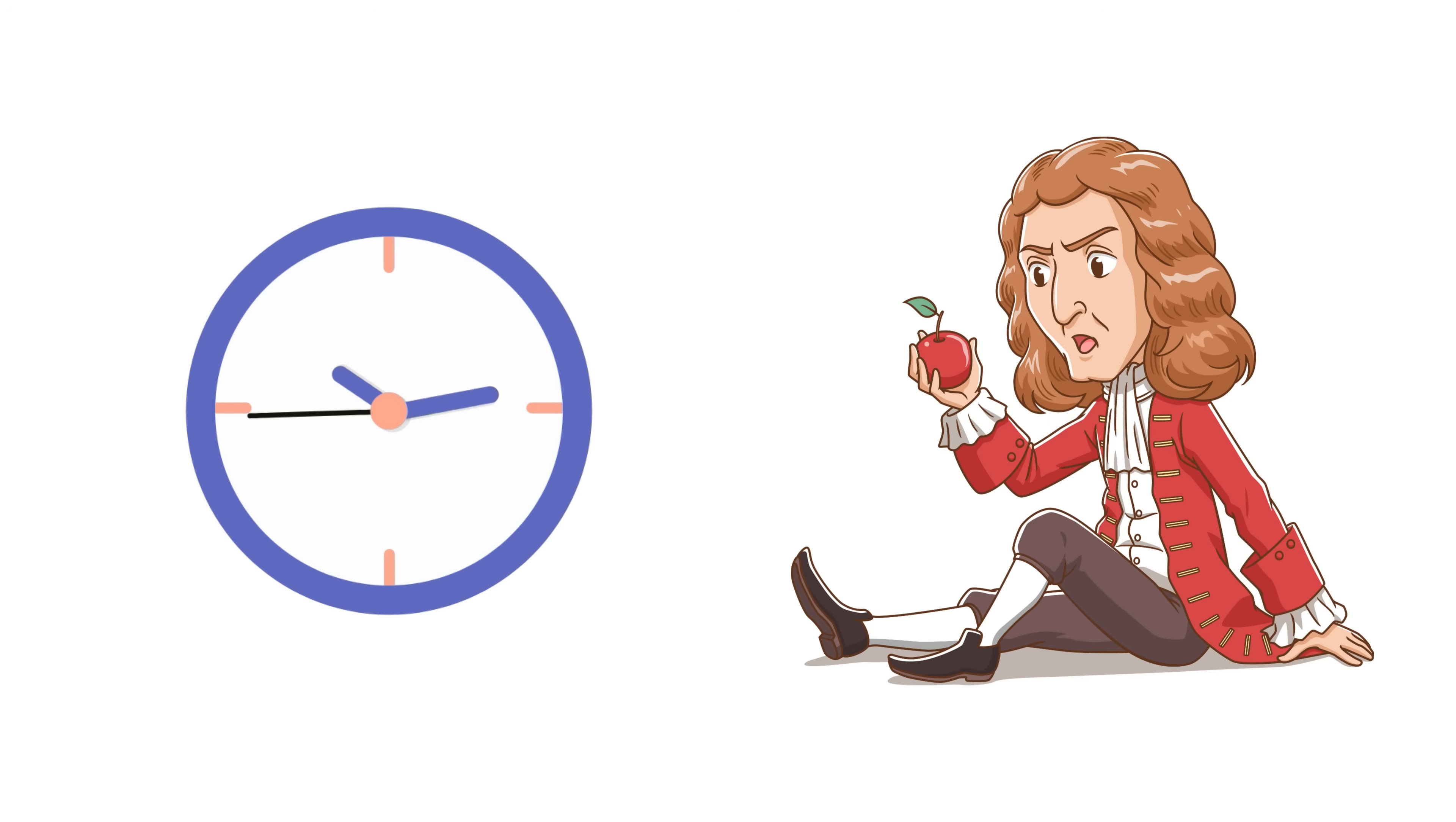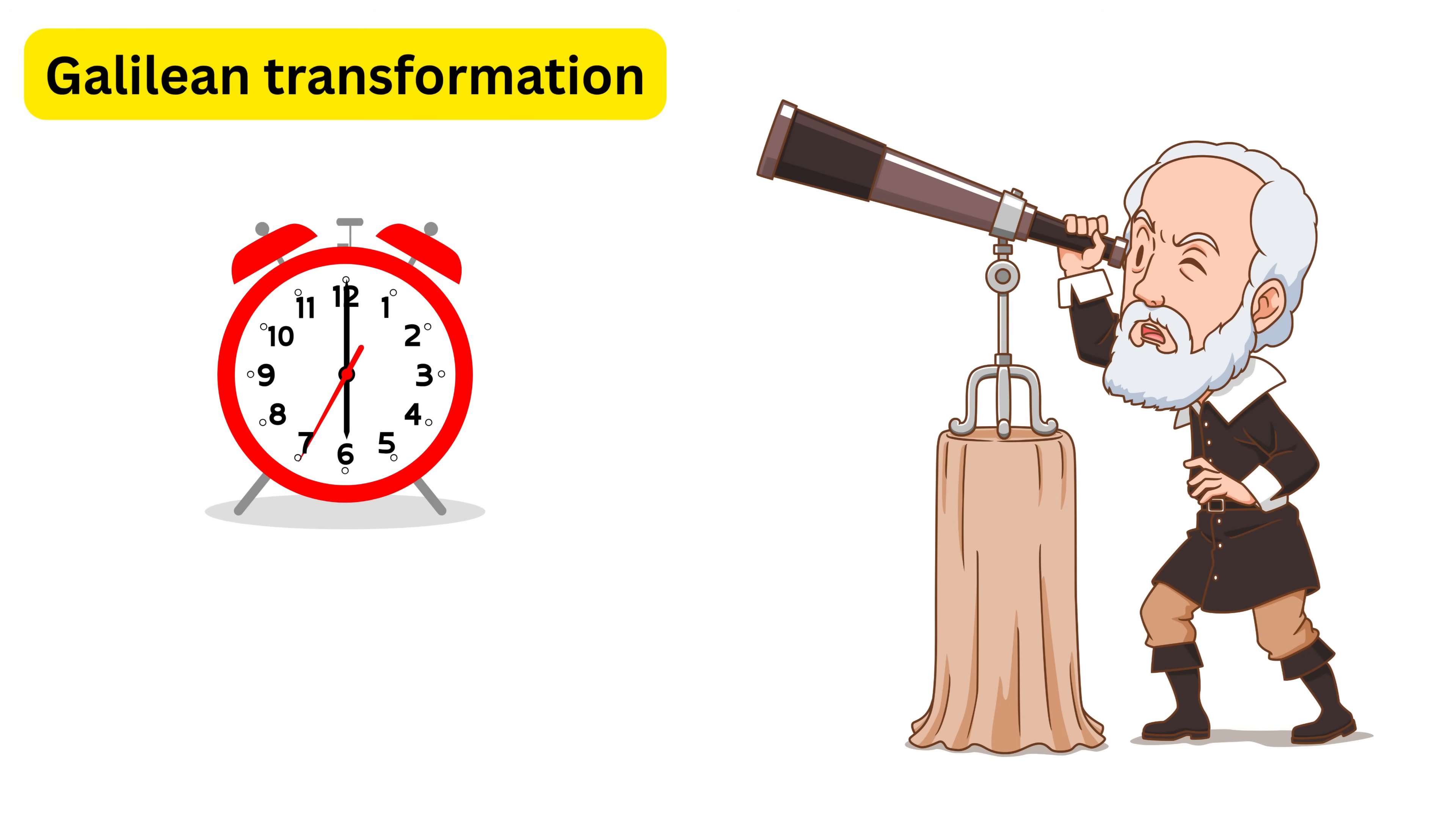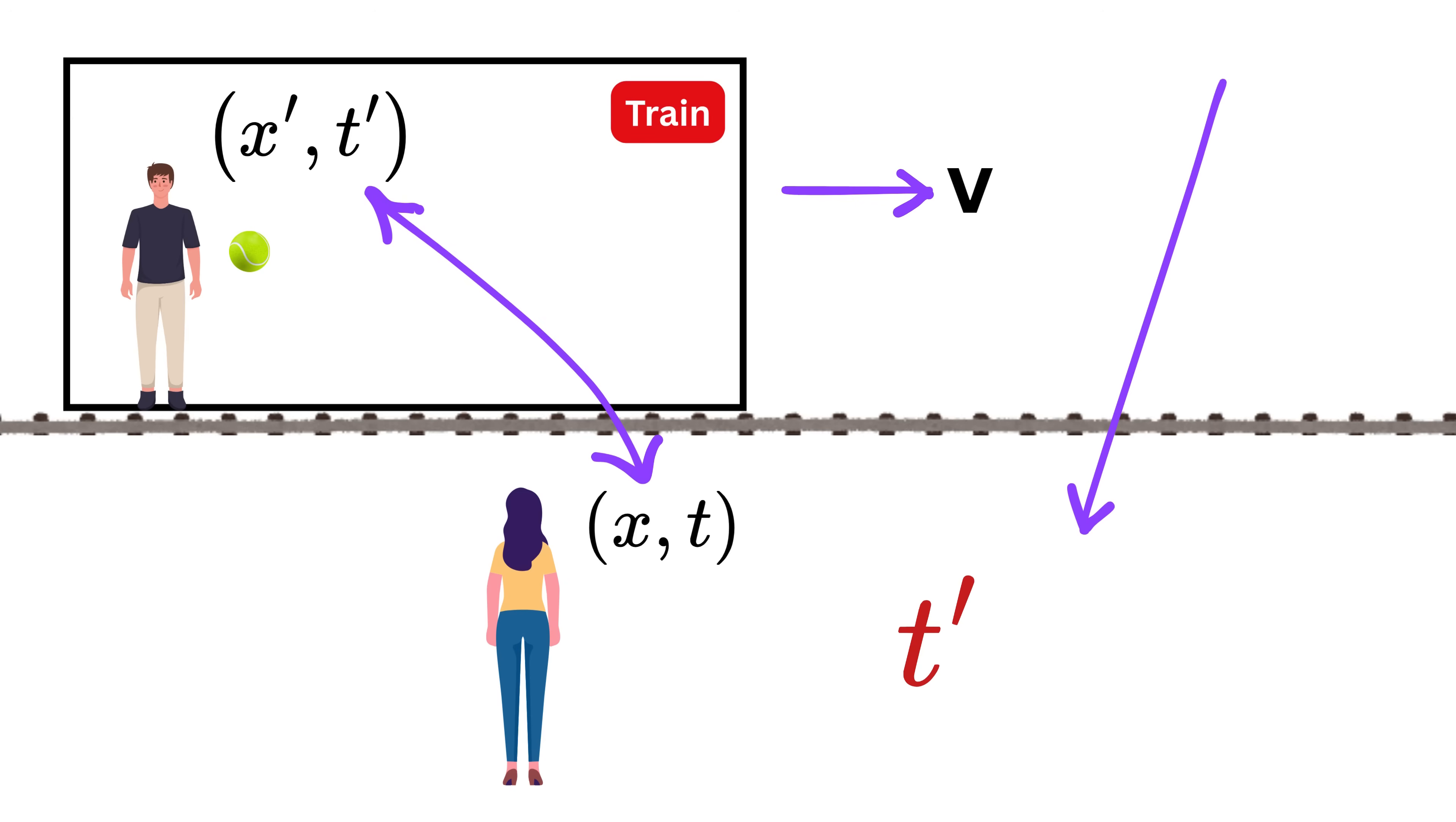Now see, before Einstein, scientists believed time was the same for everyone everywhere. This idea led to what we call the Galilean transformation. According to this, time is universal and therefore t prime equals t.